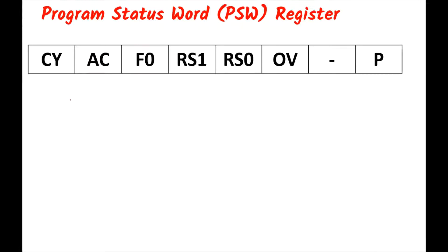The flags are: carry flag, auxiliary carry flag, F0 which is a user-defined flag, RS1 and RS0 which are register bank selector bits, OV which is the overflow flag, a dash bit that can also be used as a user-defined flag, and P which is the parity flag.